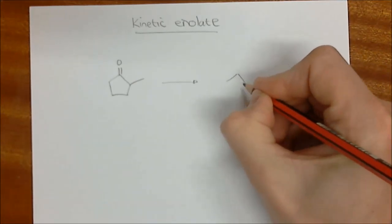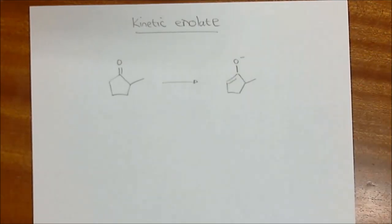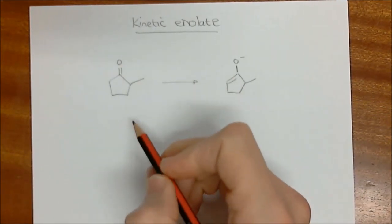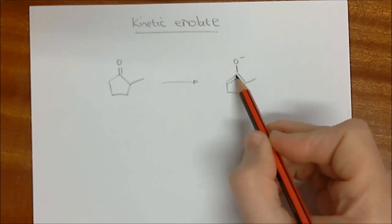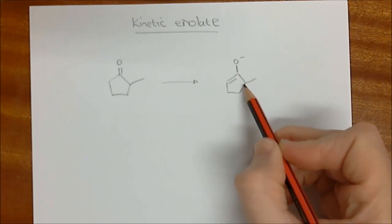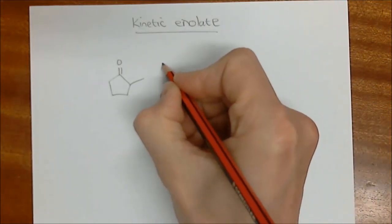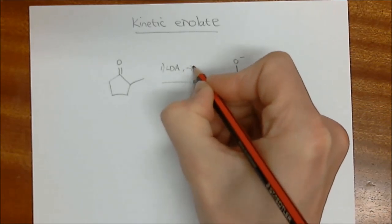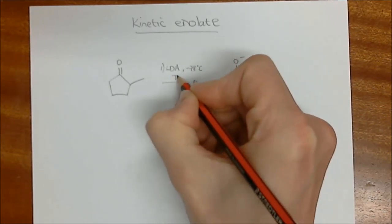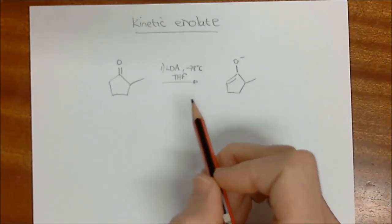So the enolate that we're looking for is this one over here. This would be the kinetic enolate in this reaction of this ketone over there because it's the least substituted enolate. If the double bond had been on this side, it would be the thermodynamic enolate. And the way we do this very simply is via the addition of LDA at minus 78 degrees Celsius in THF. This is your go-to method for forming kinetic enolates.